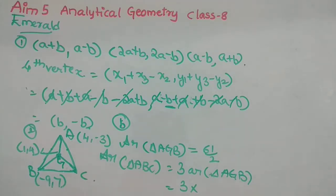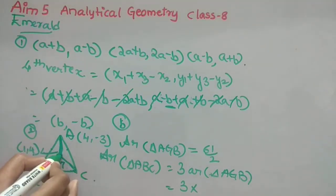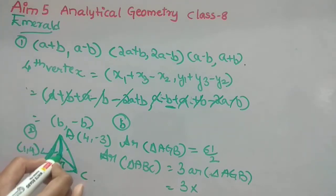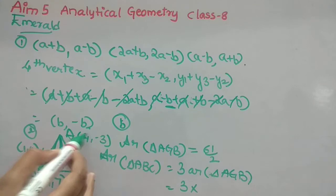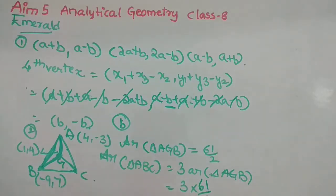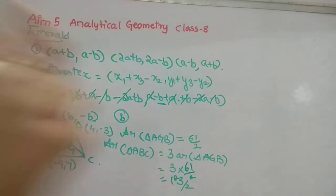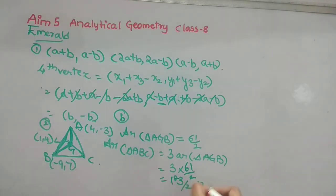So area of ABC = 3 × (61/2) = 183/2 square units. That is option A.